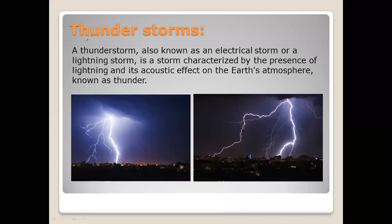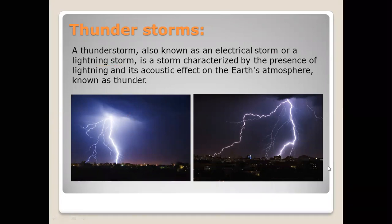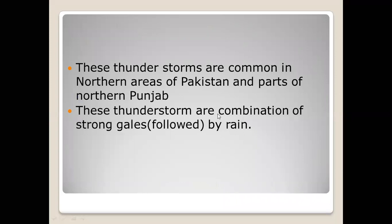The next topic is thunderstorms, also known as lightning or electrical storms. You have seen them frequently. Here is an image of thunderstorms. They are very common in the northern areas of Pakistan and northern Punjab, and they are combinations of strong gales with rain.